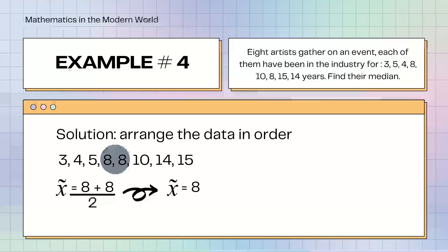Example number 4. 8 artists gather on an event. Each of them have been in the industry for 3, 5, 4, 8, 10, 8, 15, 14 years. Find their median. After we arranged the data in order from least to greatest, their median is 8. 8 plus 8 divided by 2, it is still 8.